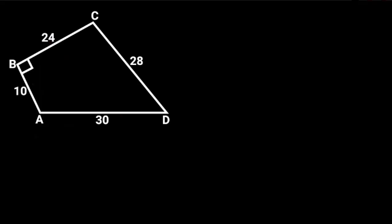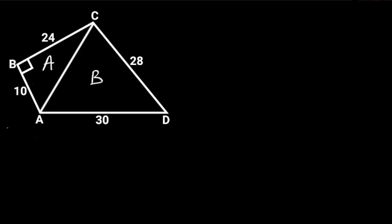To solve this problem, first let's divide the quadrilateral into two triangles by drawing a straight line from C to A. Let this be triangle A, and this triangle B. So that the area of the quadrilateral will be area of triangle A plus area of triangle B.